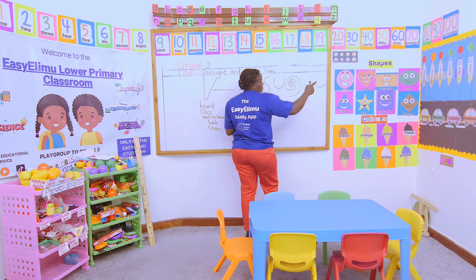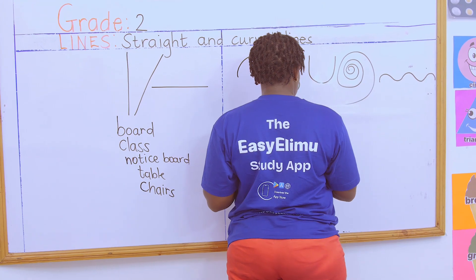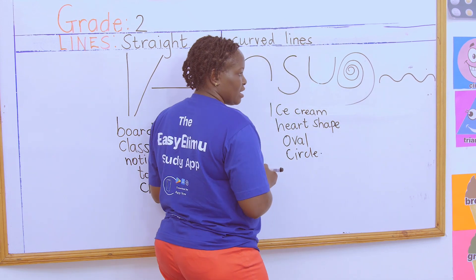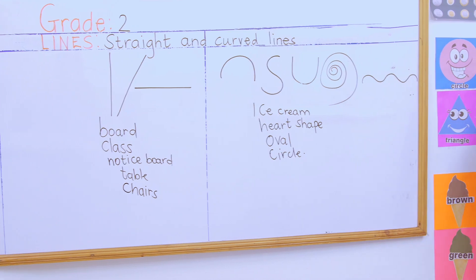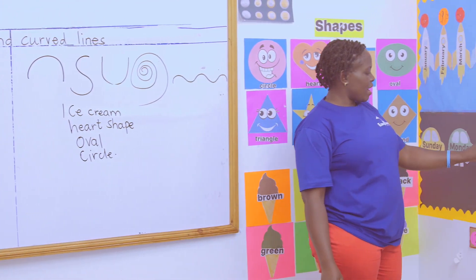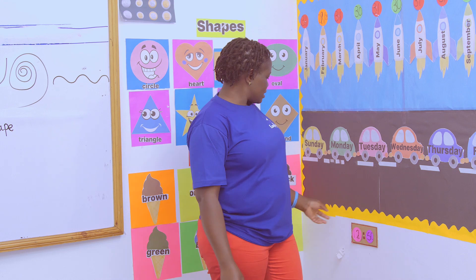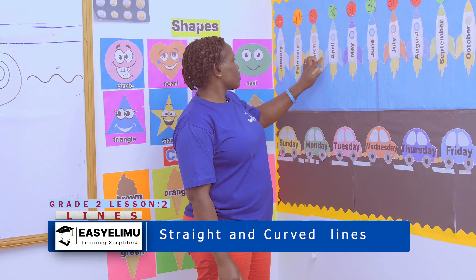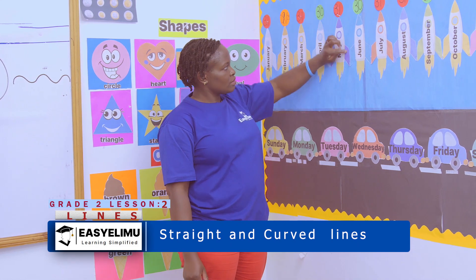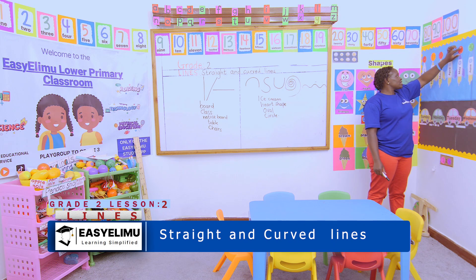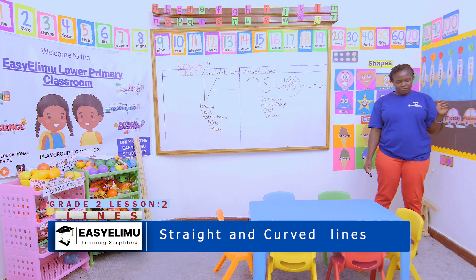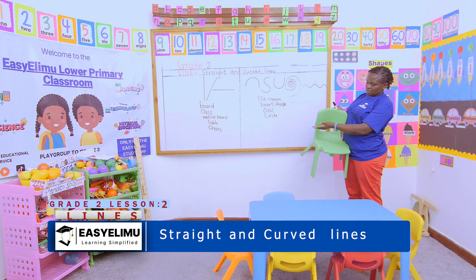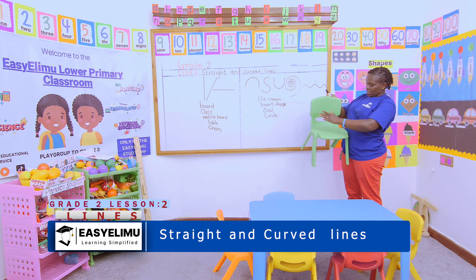Look at the oval shape — the oval shape has curved lines. The circle has curved lines. Look at the pictures of cars in our class — they have curved lines. Look at the decoration on the notice board — curved lines. Look at the aeroplanes — they have curved lines, and the stickers on the aeroplanes also have curved lines. Look at these chairs — they have curved lines.